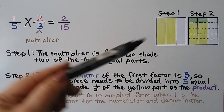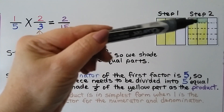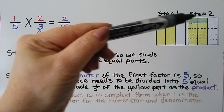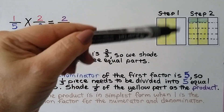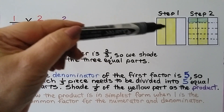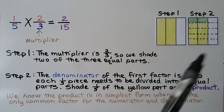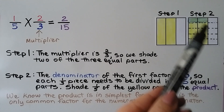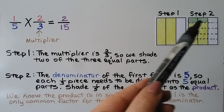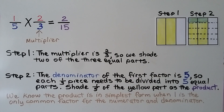Each of these sections is one-fifth, so we shade one-fifth of the originally shaded part only — not the unshaded area. The model is now in fifteen pieces, and the twice-shaded part is two of fifteen. The product is two-fifteenths.